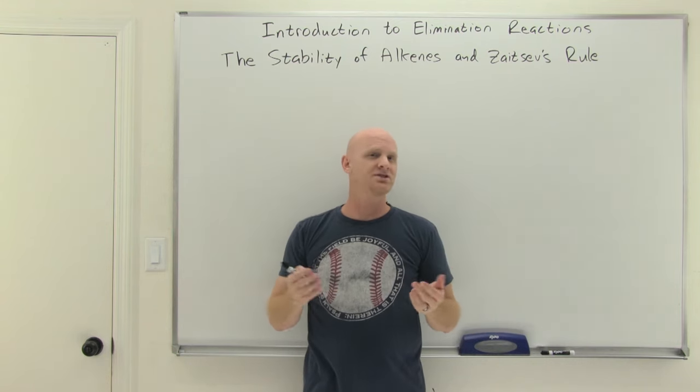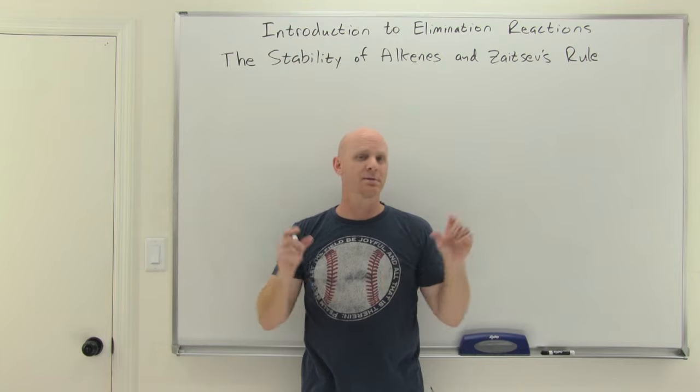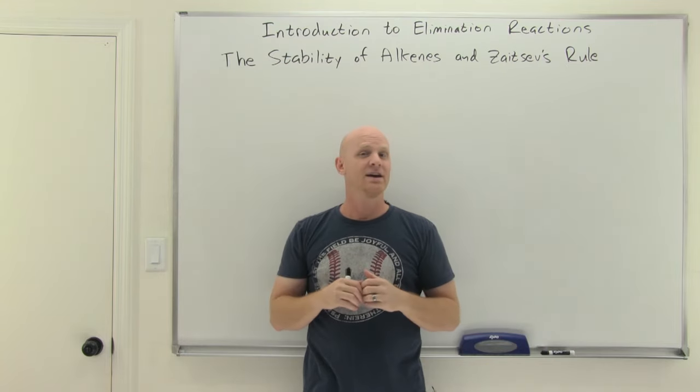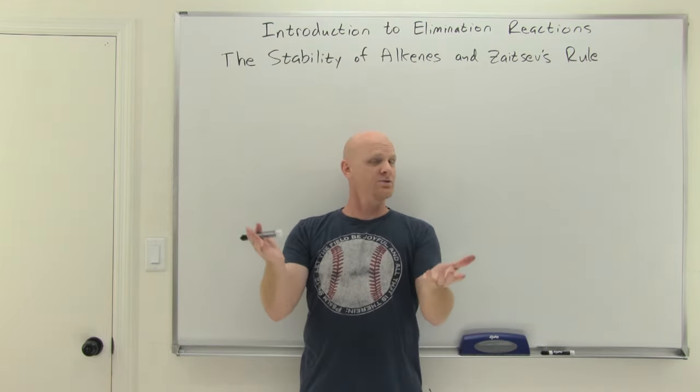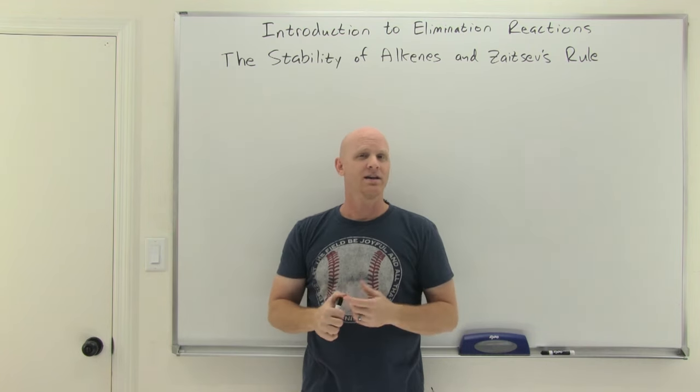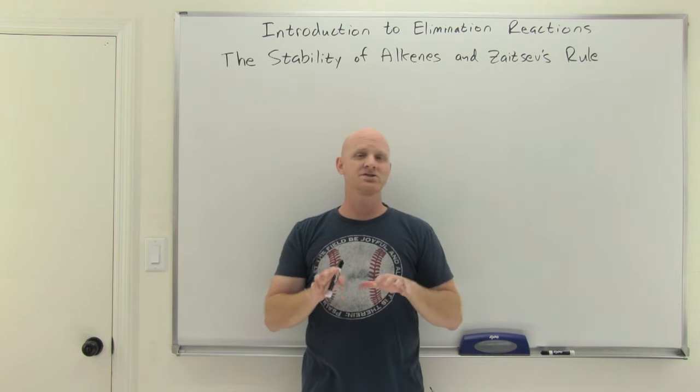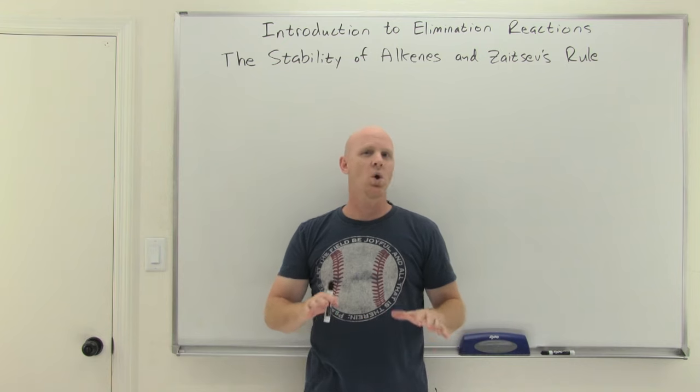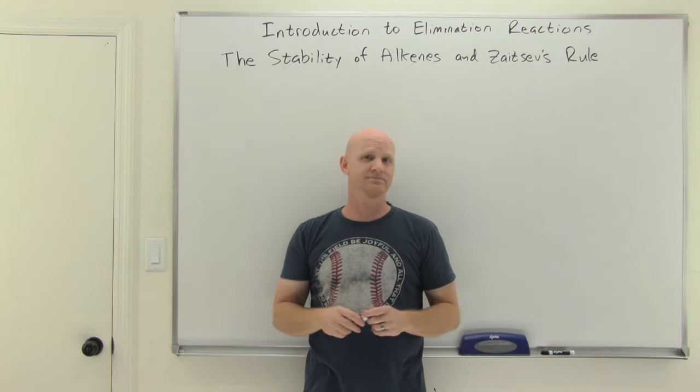We call these elimination reactions because we're going to eliminate two sigma bonds from adjacent carbon atoms in order to make a pi bond between them, which will then result in an alkene being produced. We'll see in the future you can also form alkynes, but in this chapter, we will restrict ourselves to only looking at alkene formation.